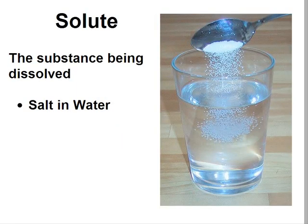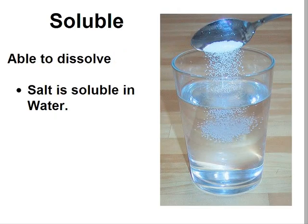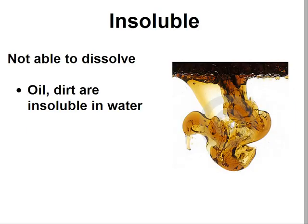When we discuss solutions, there are two key words: solute and solvent. The solute is the substance that is being dissolved. In the picture, salt is being dissolved in water, so salt is the solute. The solvent, on the other hand, is the substance that is doing the dissolving — water in this salt-water mixture is the solvent. Two other key words are soluble and insoluble. Soluble means able to dissolve — salt is soluble in water. Insoluble means not able to dissolve — oil in water is insoluble because oil does not dissolve in water; it separates and floats to the top.